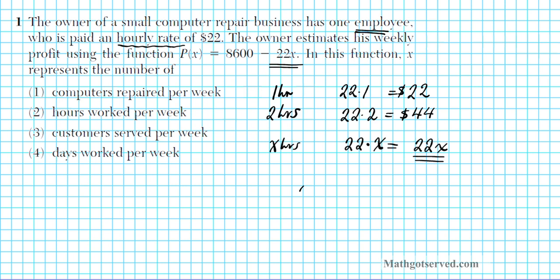So the 22x, the 22 represents the hourly wage. Since he is getting paid hourly, what does x represent? X represents the number of hours the employee worked per week. So if you look at these options right here, what is the meaning of x? X represents the hours worked per week, option number 2.